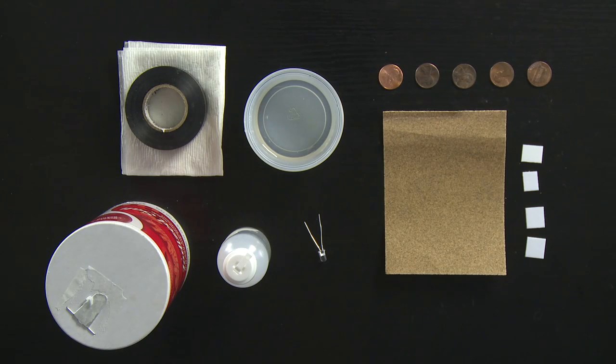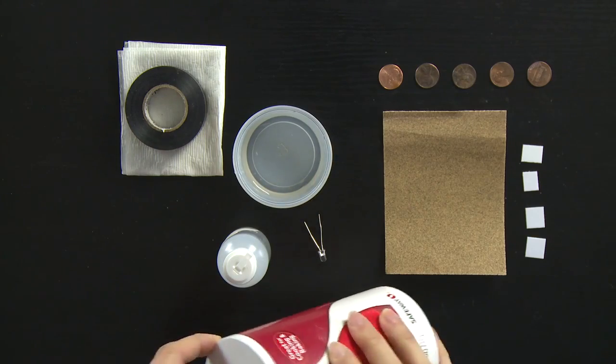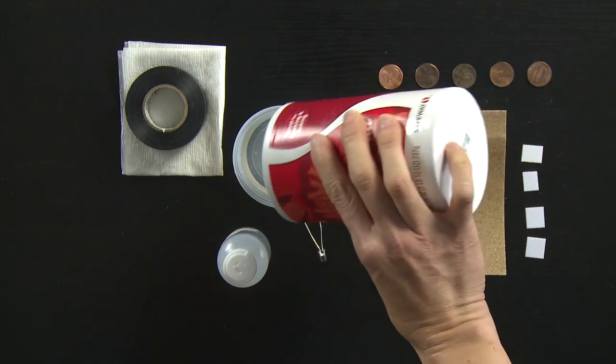The basic building block of a battery is having two different metals and a salty solution in between. You're going to make a salt solution by taking your small container of water and adding salt until you have a saturated solution.